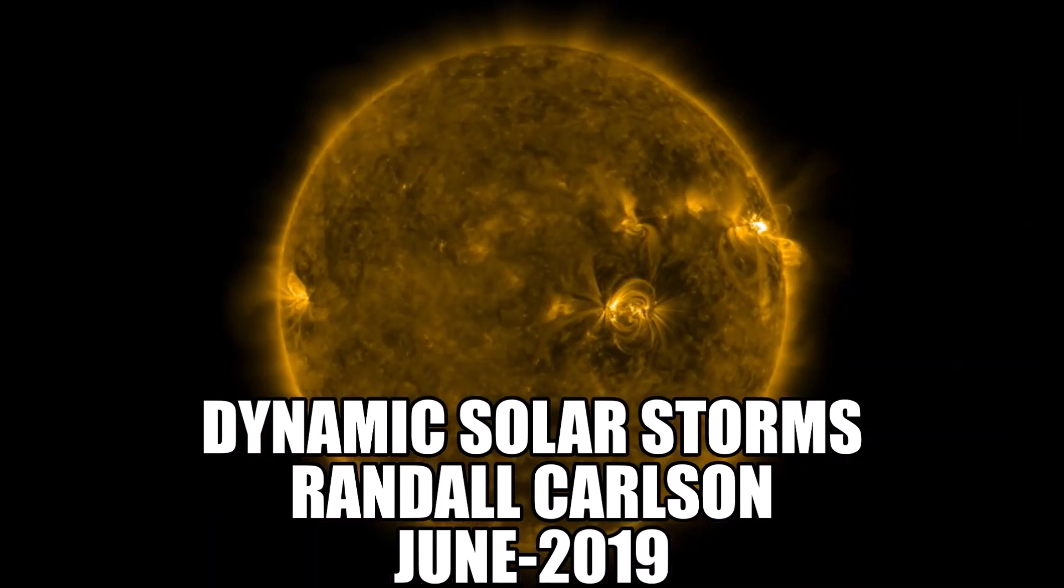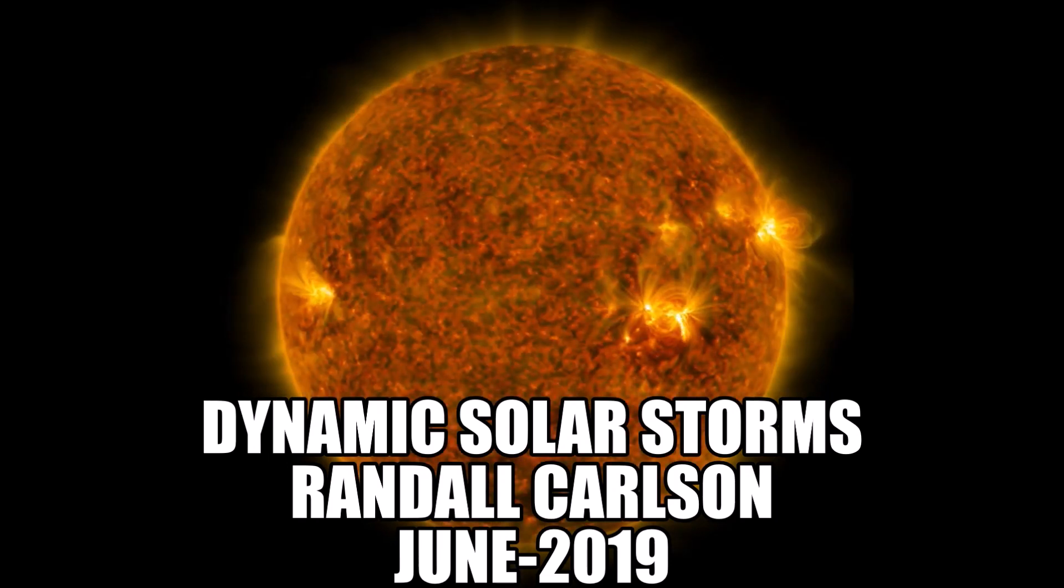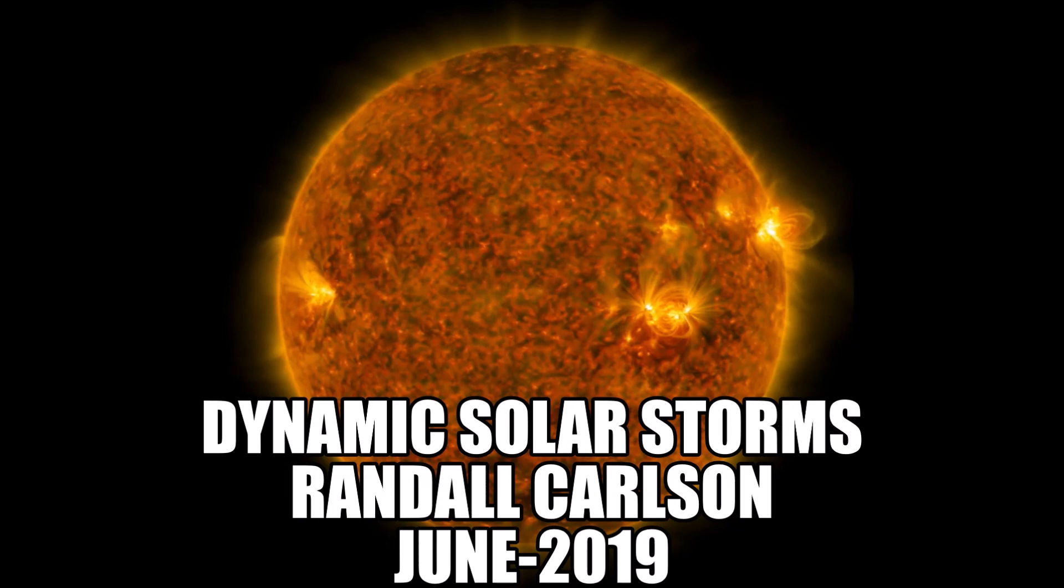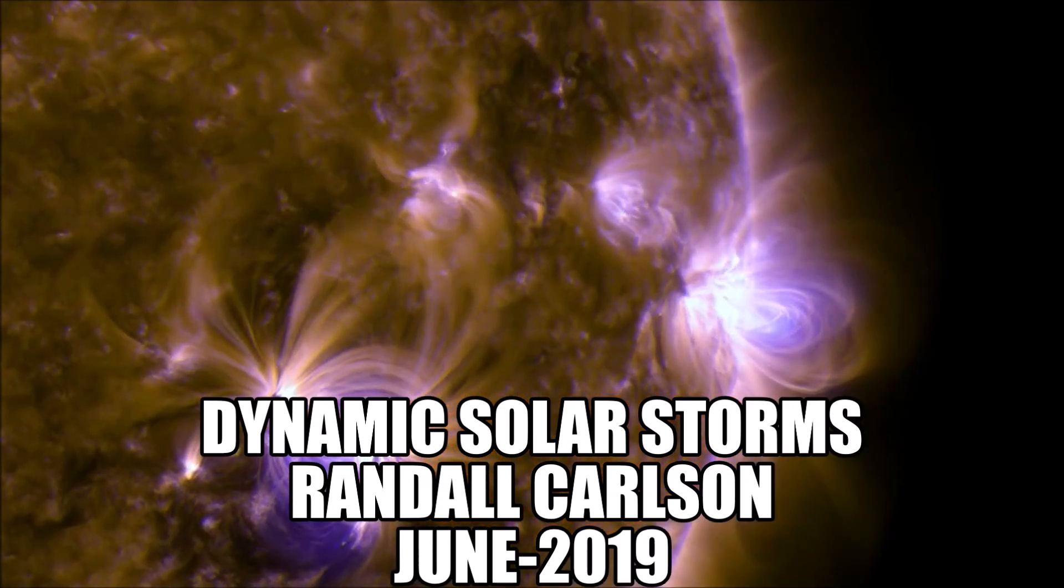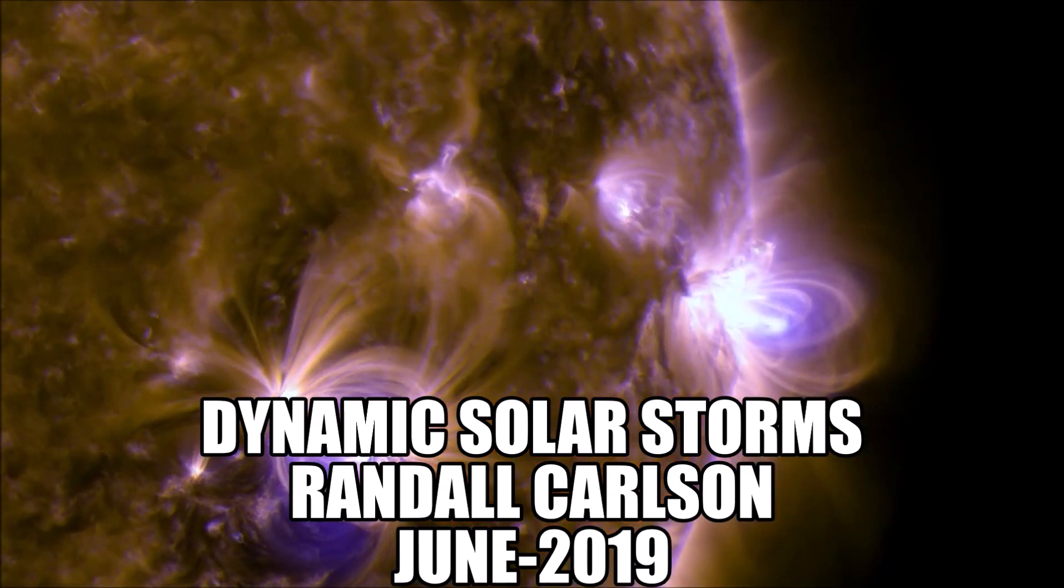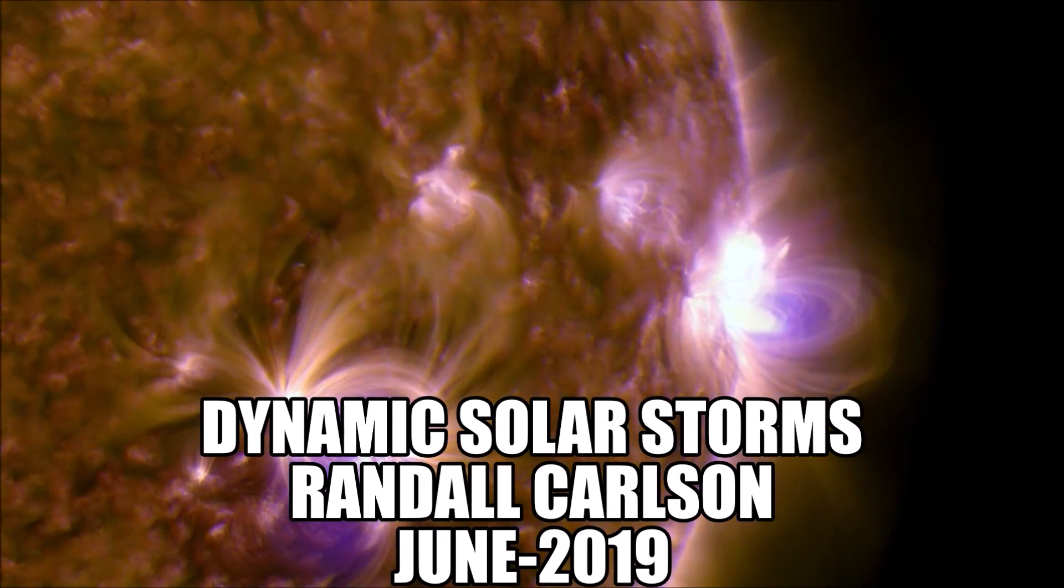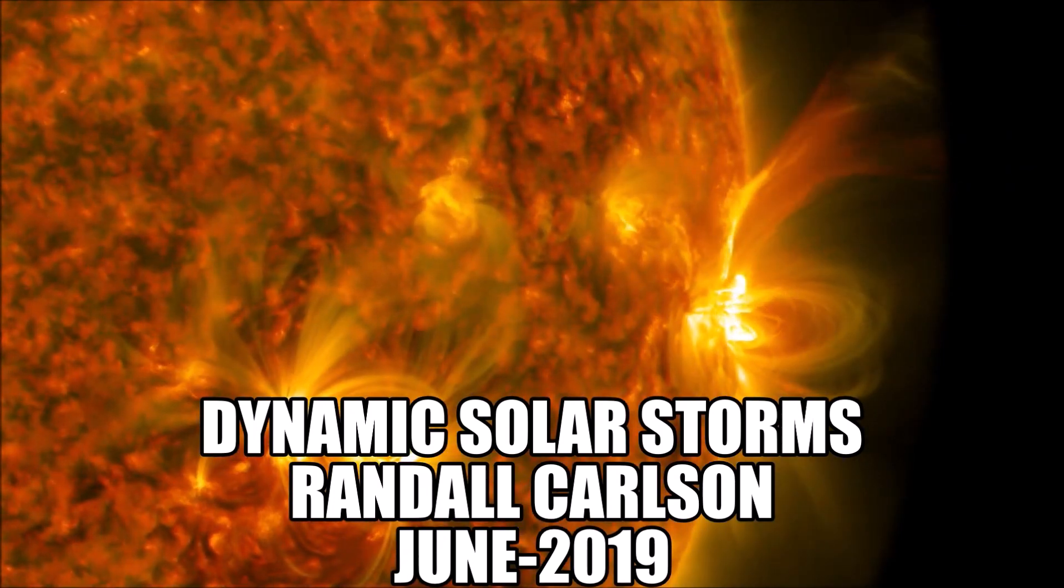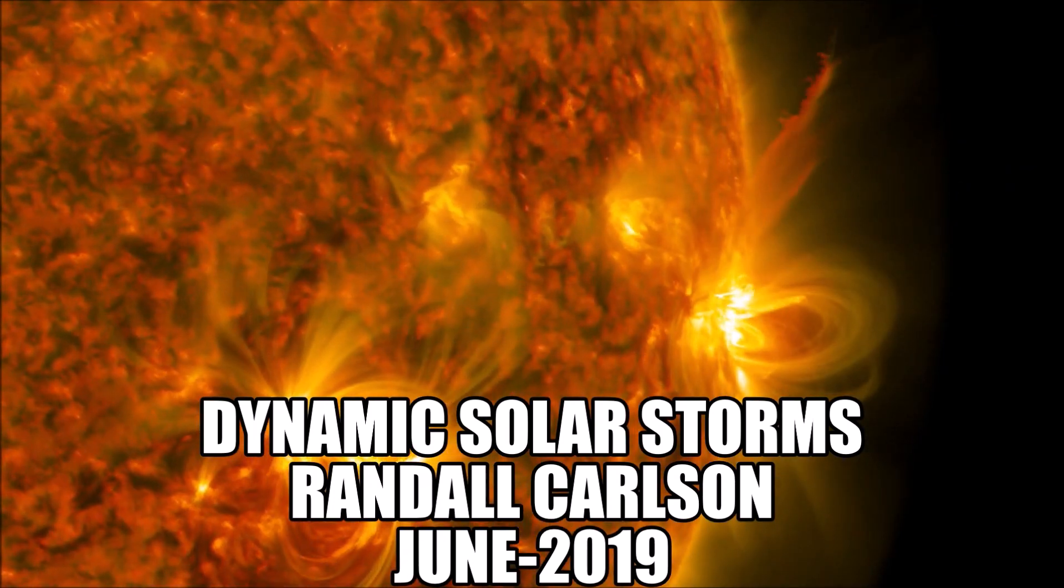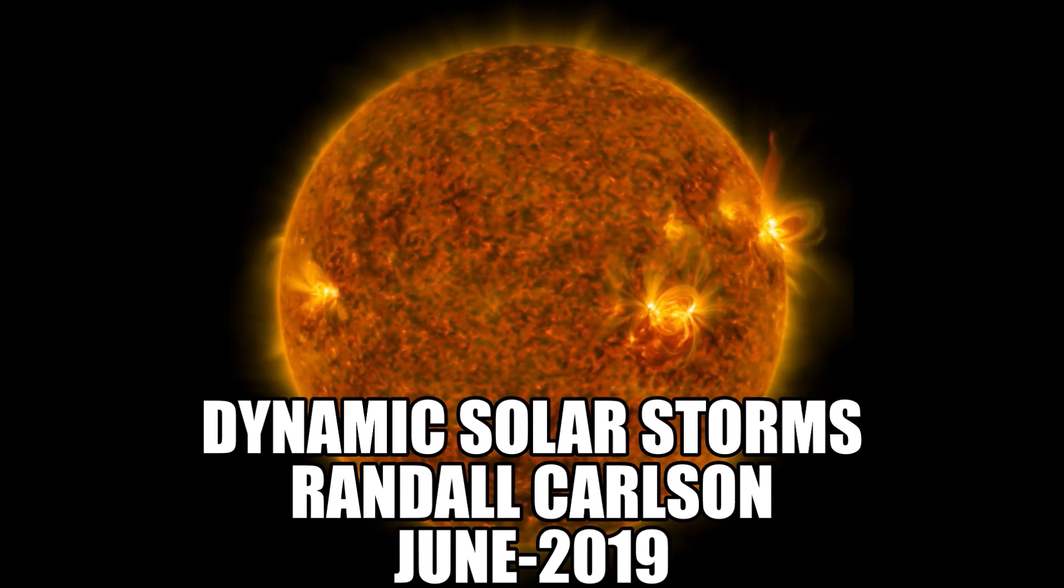One huge event that was dated to 660 BC, another one that was dated to 775 AD. Then there was the coronal mass ejection of July 23rd, 2012, which was probably even more powerful than the Carrington event of 1859.